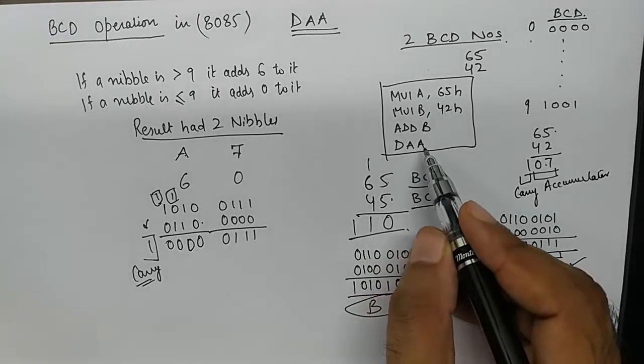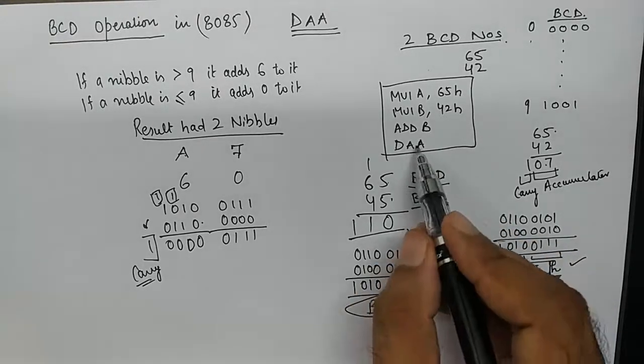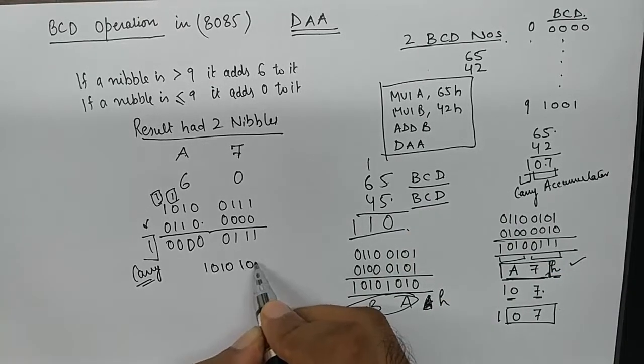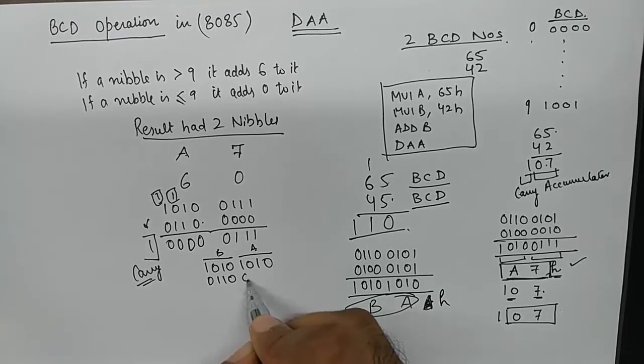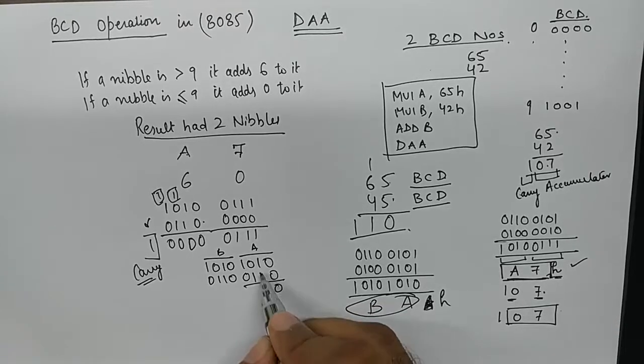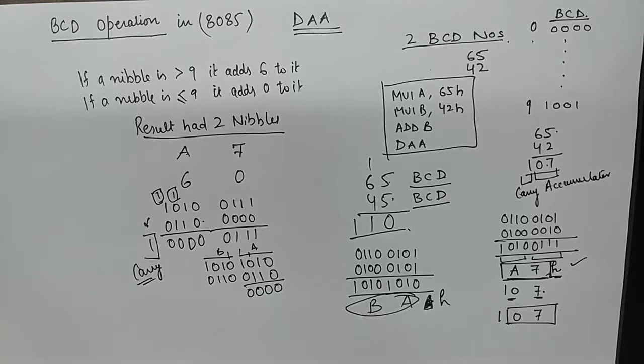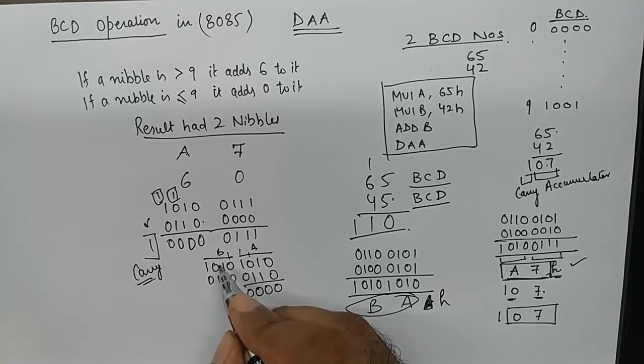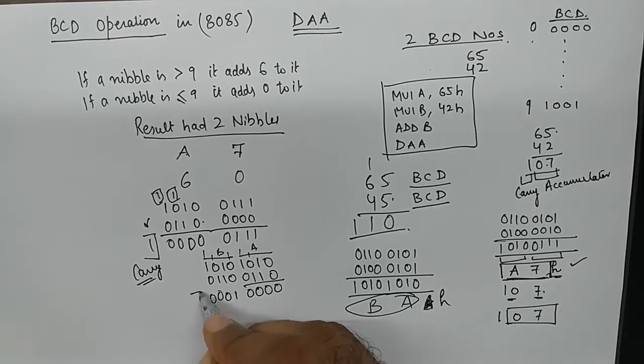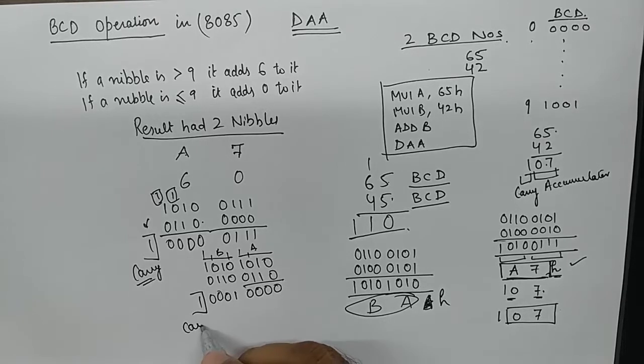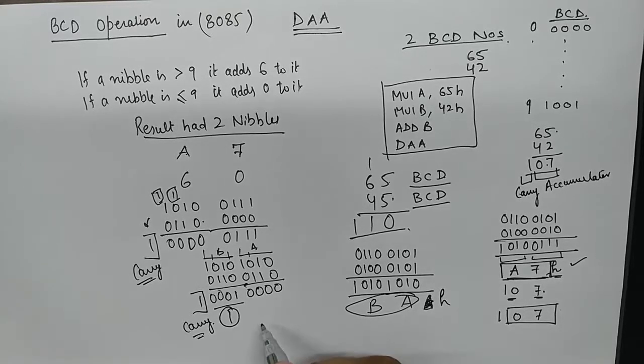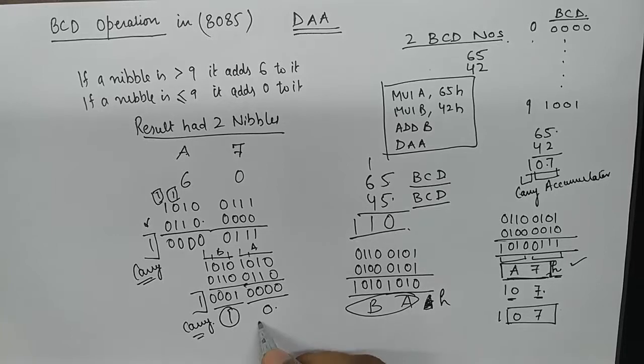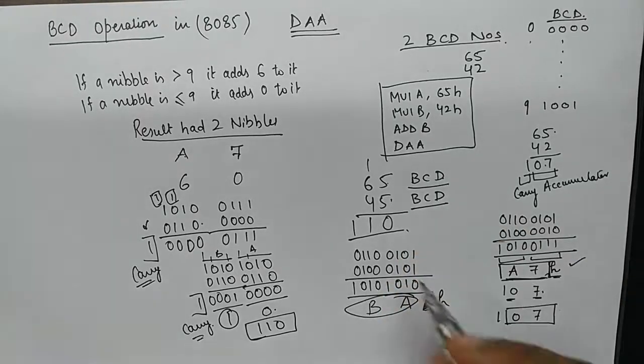This is something where both the nibbles are greater than 9. So what microprocessor does via executing DAA command is it takes BA, both the nibbles, and it adds 6 to it. When it does so, it gets a carry 1 and the higher nibble is 1 again, and the lower nibble is 0, resulting in 1, 1, 0 which is the actual BCD result.